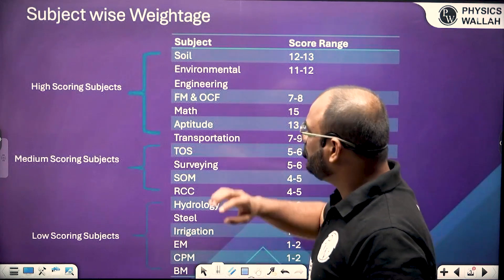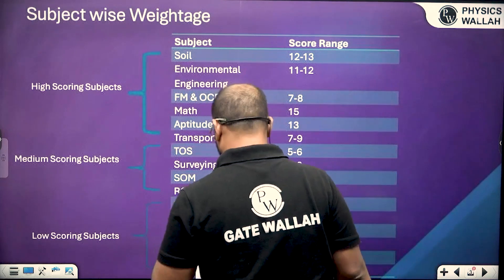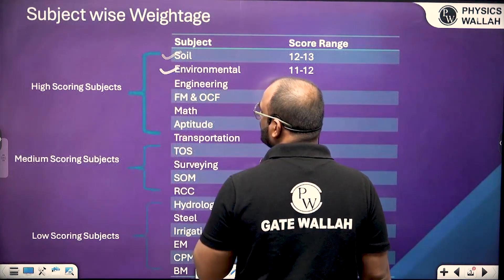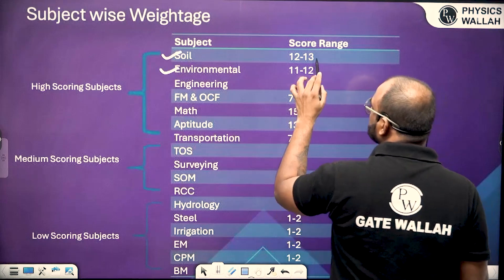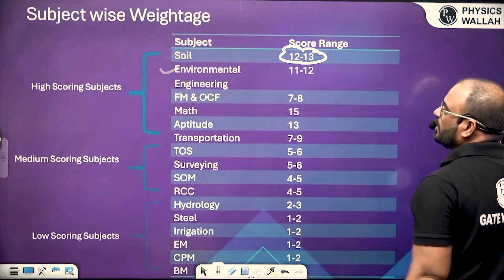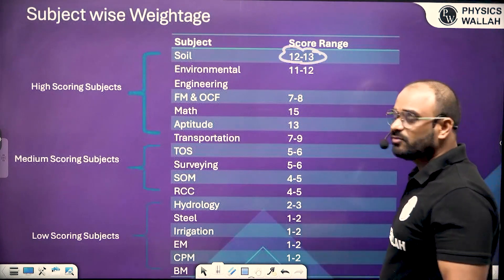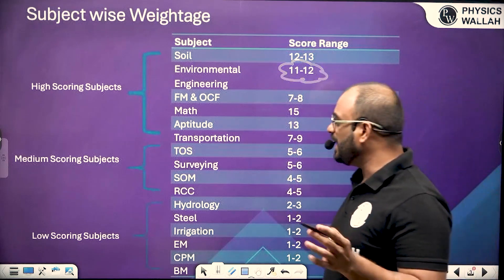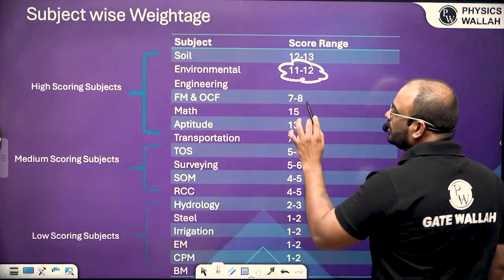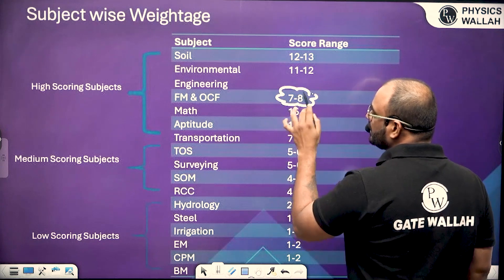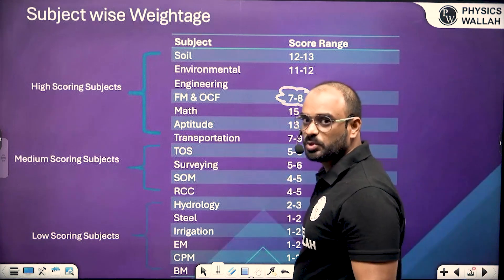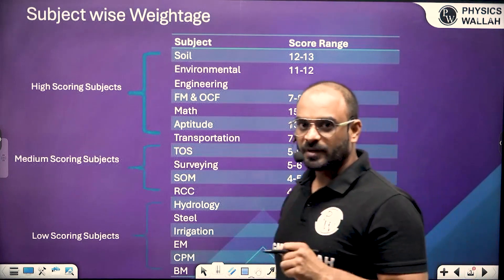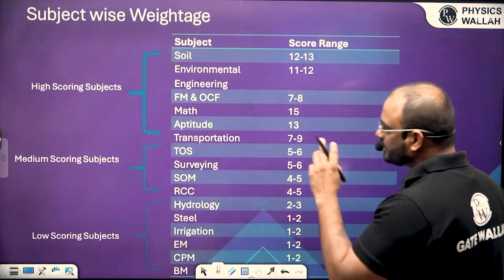In the high scoring subject category, we have soil mechanics with a weightage of 12 to 13 marks, then environmental engineering with 11 to 12 marks. FM and OCF is 7 to 8 marks — this is one of the fundamental subjects, most important for us, and we need to cover this type of subject first in our preparation journey.